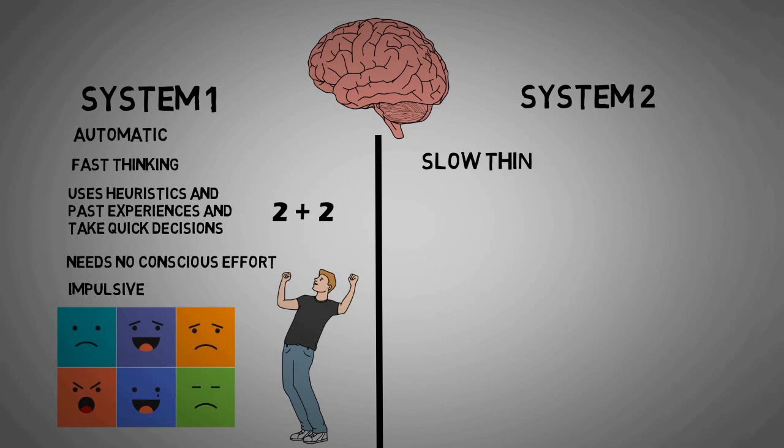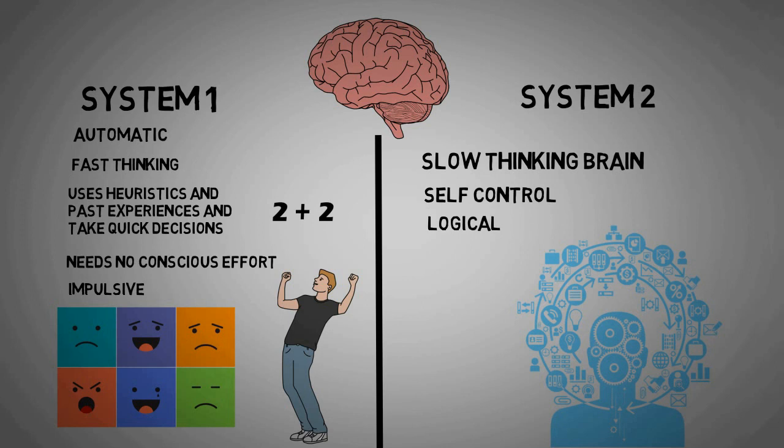System 2 is slow thinking brain which exhibits self-control and is logical. It tries to solve complex decision problems with knowledge and analysis. Like if someone asks 17 multiplied by 24, our mind may take some time to calculate it. It is deliberate and more orderly.